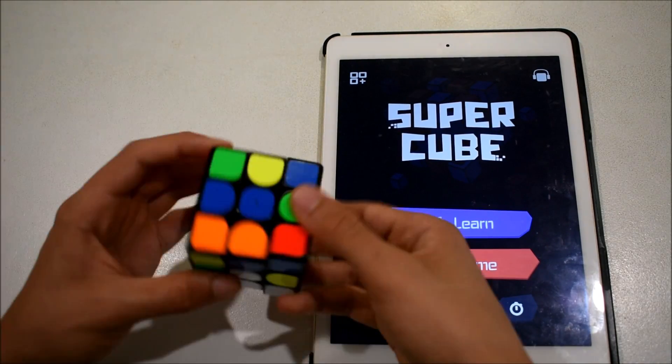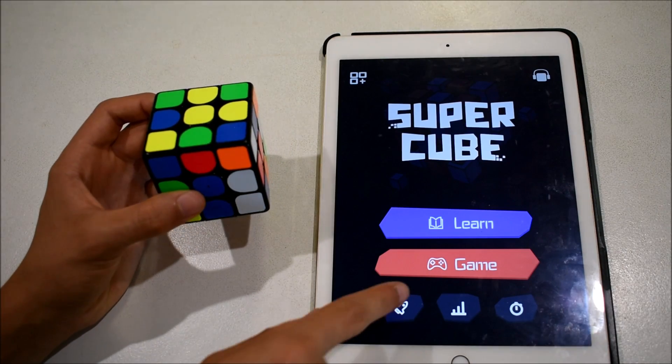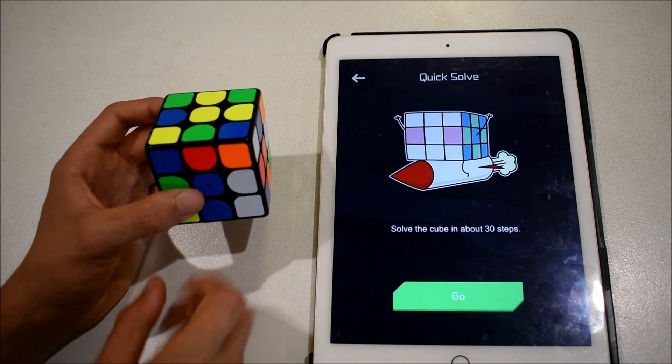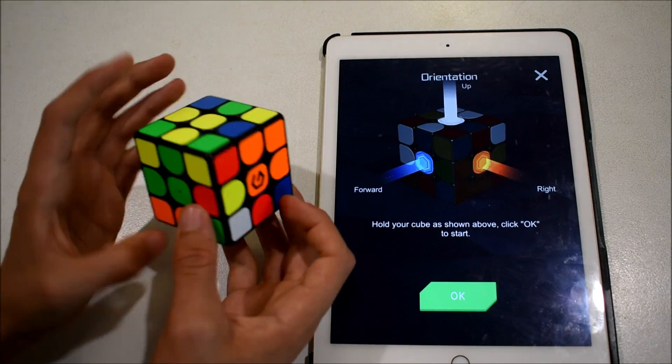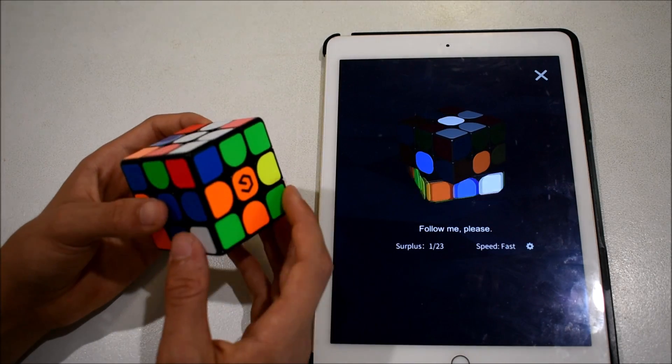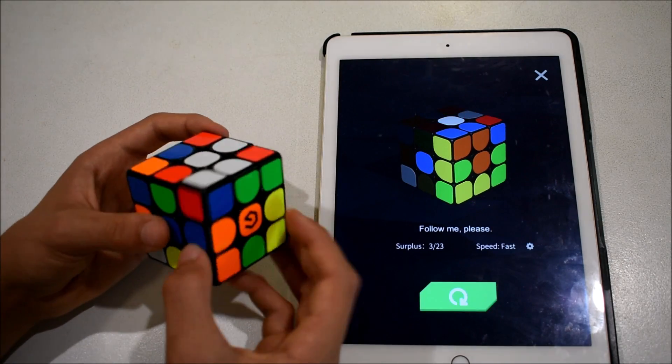Second, the quick solve. Here, the SuperCube app will show you the exact moves you need to do to solve your cube because it obviously knows the state of your cube being connected. The cube will turn one move at a time on screen and you have to follow along on yours.